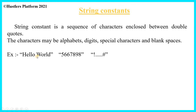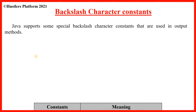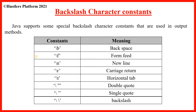The third type is backslash character constants. Java supports some special backslash character constants used in output methods. These are: \b for backspace, \f for form feed, \n for new line, \r for carriage return, \t for horizontal tab, \" for double quote, \' for single quote, and \\ for backslash.